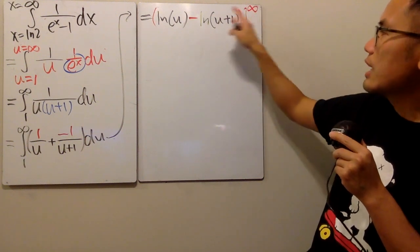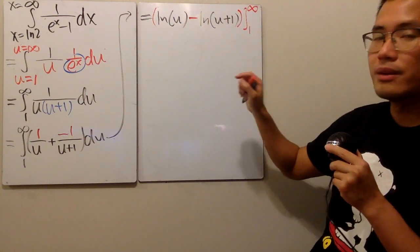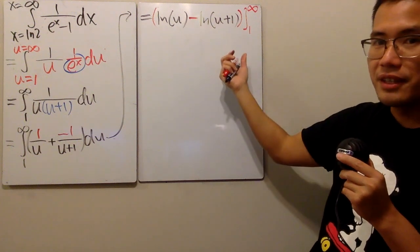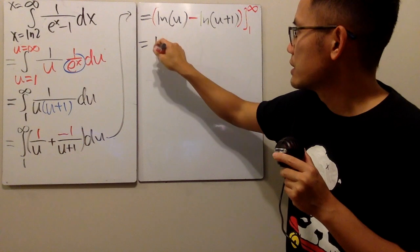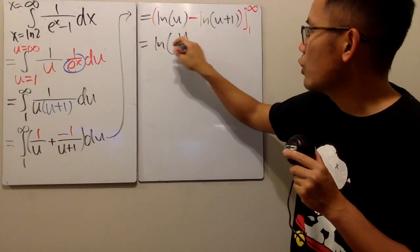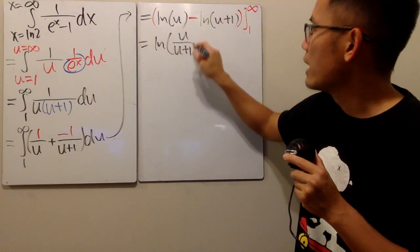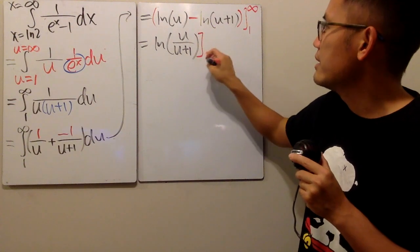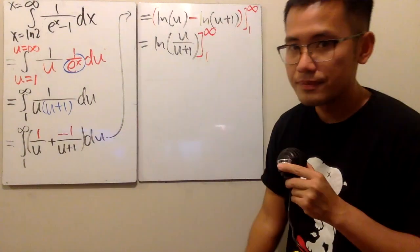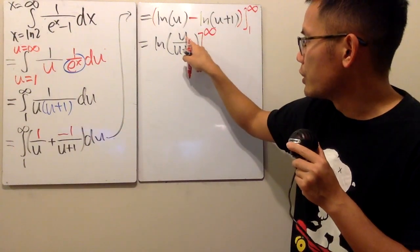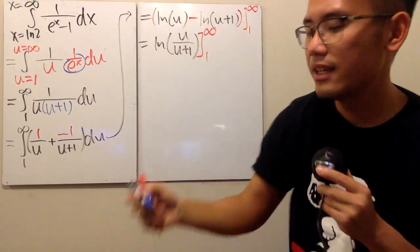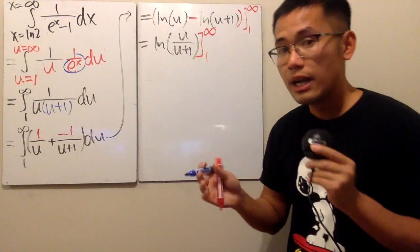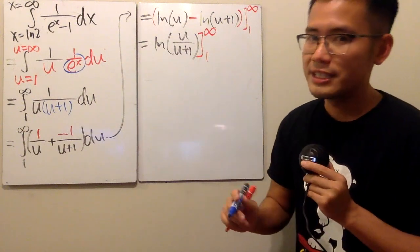However, it's not a good idea to put the infinity here and here, because we get infinity minus infinity. The better way to do it is you combine the natural logs first, which is ln u over u plus one, like so. And then you plug in numbers. When I put infinity to here and here, I will have to take the limit. I will have to do it on the side to show work, to just make sure that this right here turns out to be nice.